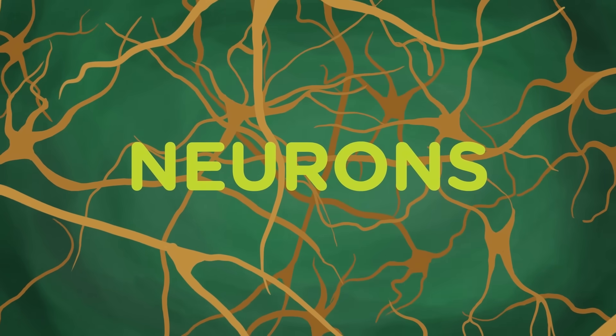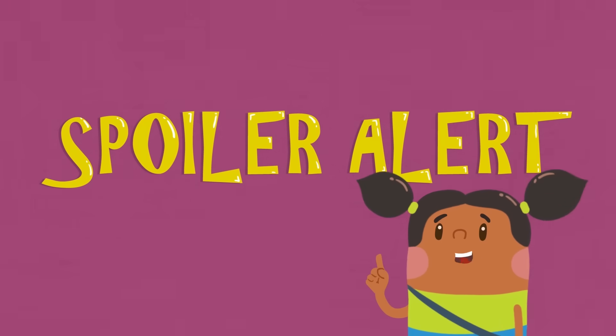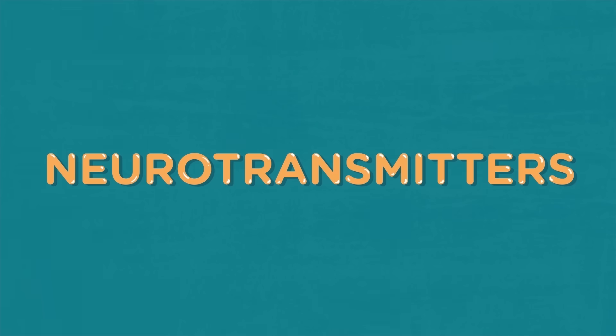The brain transmits information throughout the body using a system of interconnected nerve cells called neurons. Chemical messengers called neurotransmitters carefully move the information from one neuron to the next. Spoiler alert: these messengers play a key role in the way alcohol affects the brain, but hang on, we're getting there.